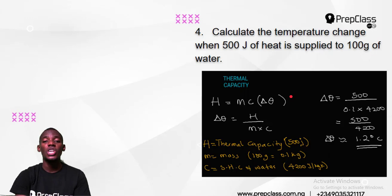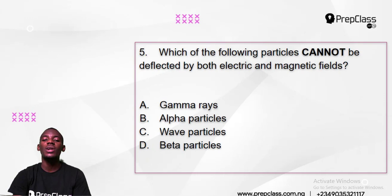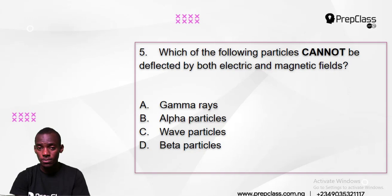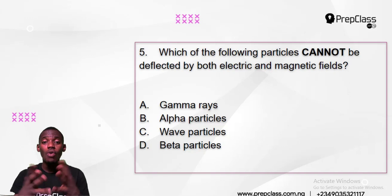Let's check out number 5: what type of particle cannot be deflected by an electric or magnetic field? Is it gamma ray, alpha ray, wave particle, or beta particle? They are all wave particles, so wave particle is out. But one of them is stronger than electric and magnetic field — the answer is gamma ray.